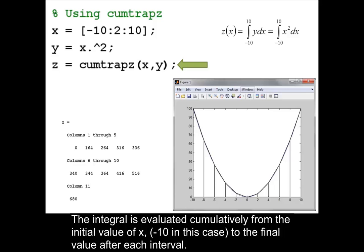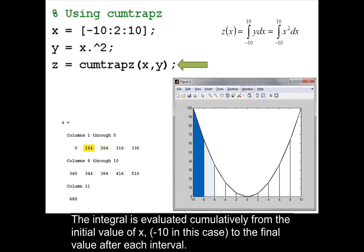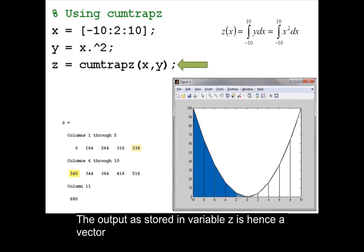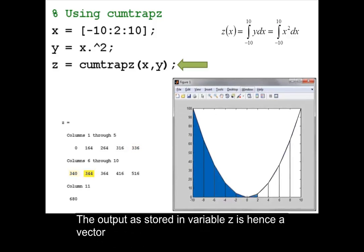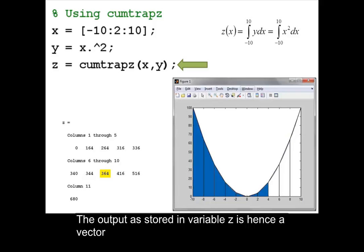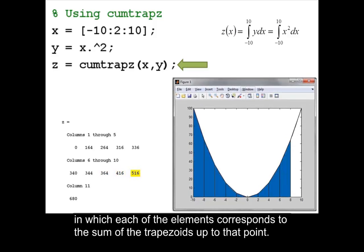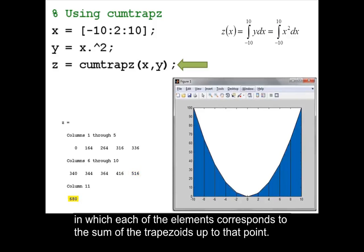The integral is evaluated cumulatively from the initial value of x, negative 10 in this case, to the final value after each interval. The output as stored in variable z is hence a vector in which each of the elements corresponds to the sum of the trapezoids up to that point.